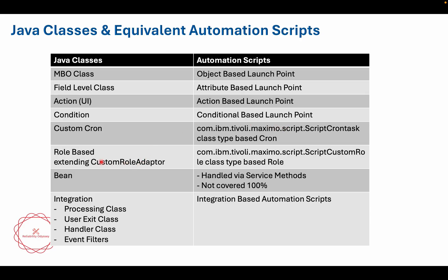The role-based class extends the custom role adapter. If you want to programmatically decide whether an assignment goes to person group A, B, or C, you can use role-based classes. The equivalent can be written in automation script — when creating a custom role, you associate it with the out-of-the-box script custom role class. For bean classes, they handle service methods and you can write the logic in an object-based launch point as well.